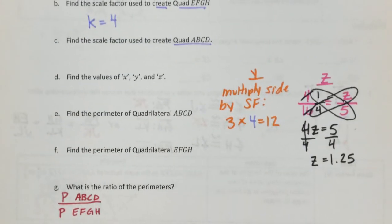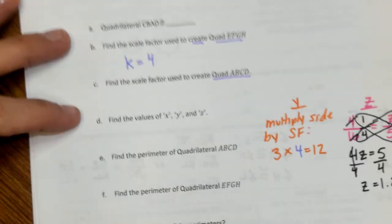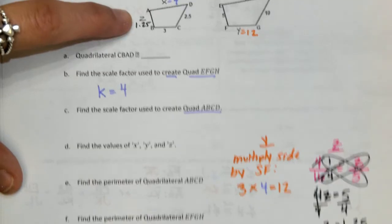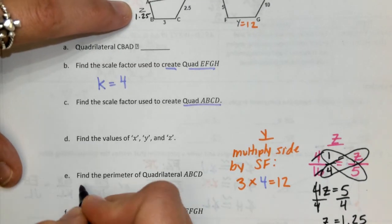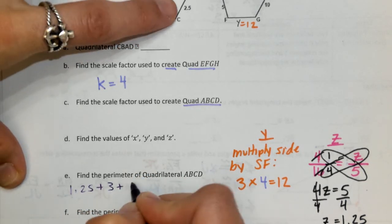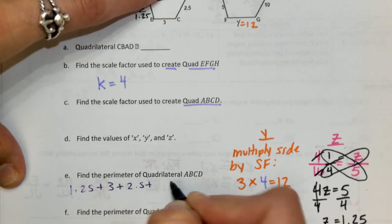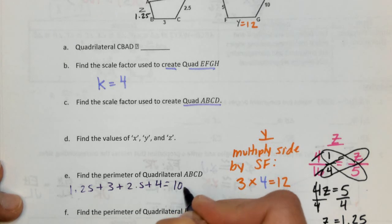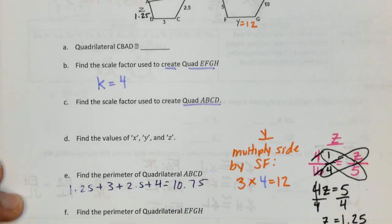Now when I go through the perimeters, I'm not going to use separate colors. I'm just going to go straight into this, grab a pen, and your perimeter, we need to remember, is going to be adding up all 4 sides. So when I add up all 4 sides of quadrilateral ABCD, I'm going to be adding 1.25 plus 3 plus 2.5 plus that 4. When I add these all together, we'll get a decimal. I'm going to wind up with 10.75.